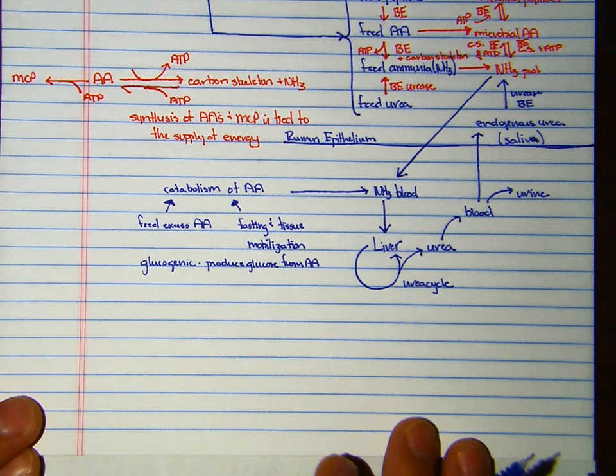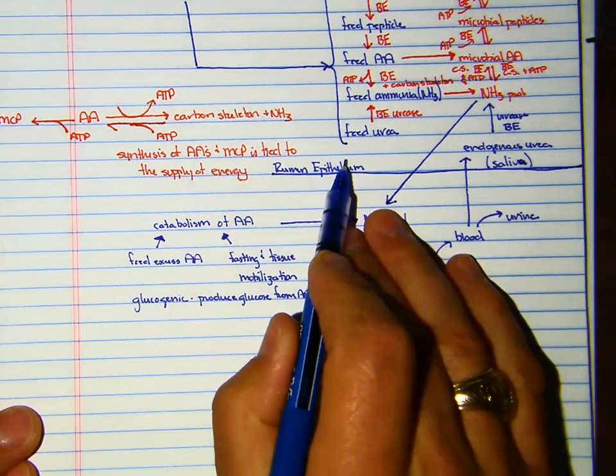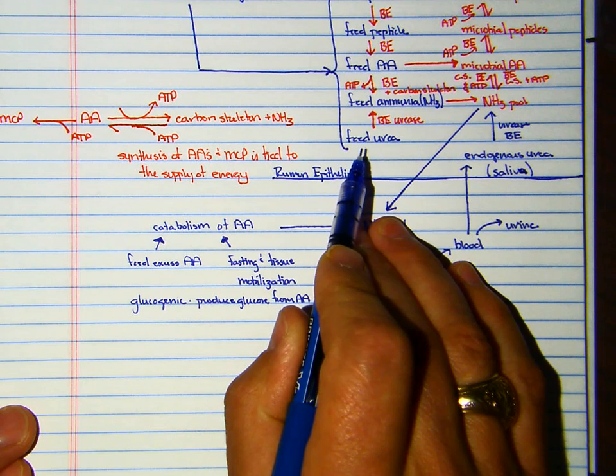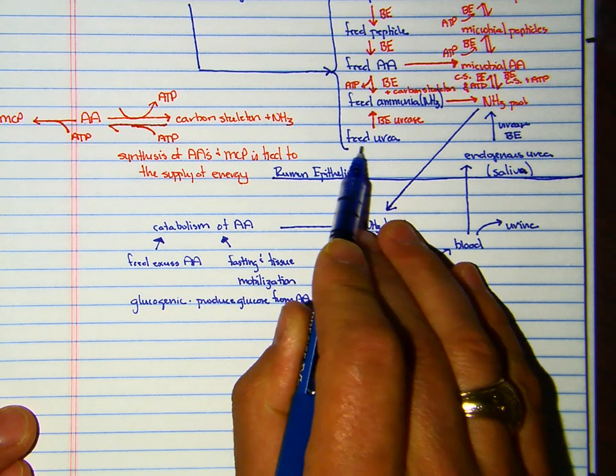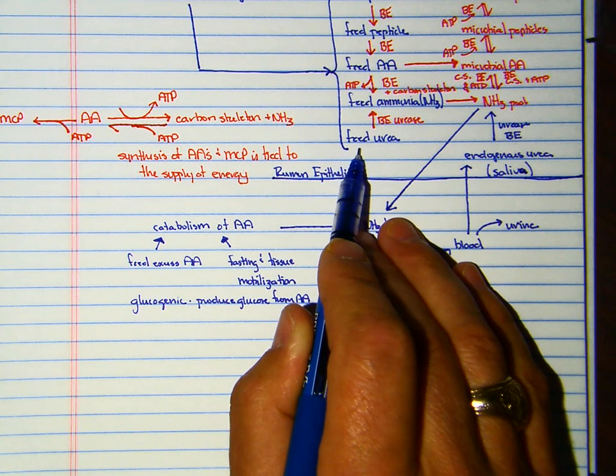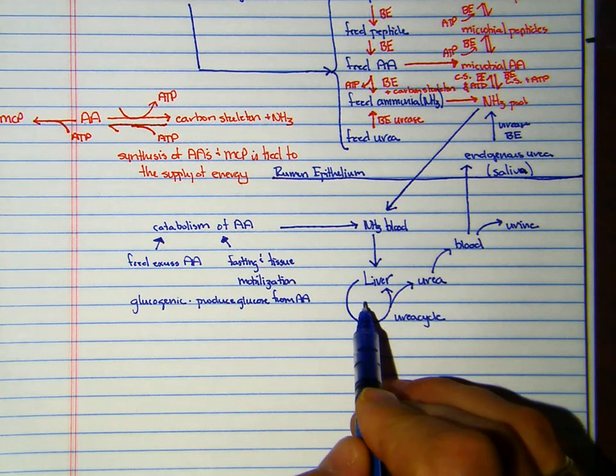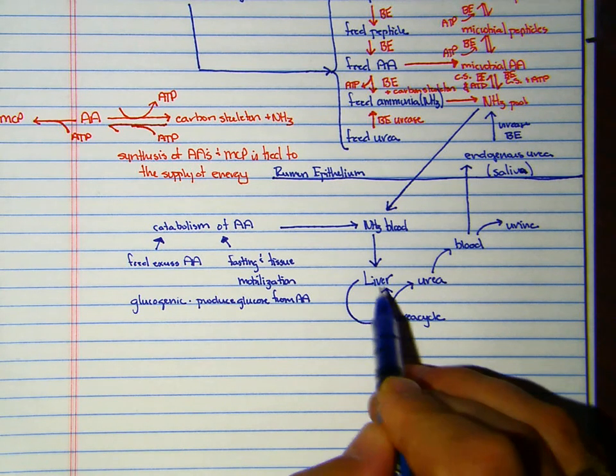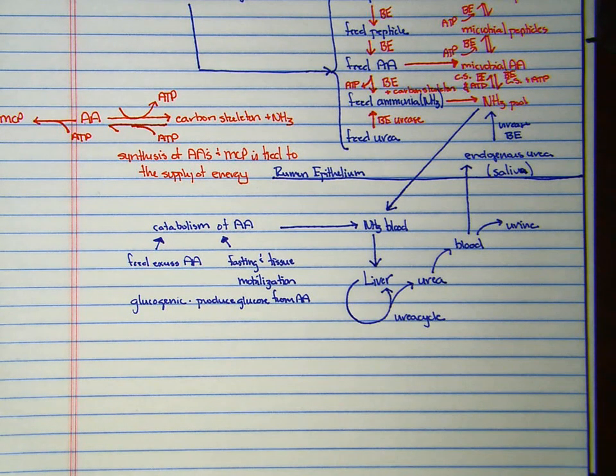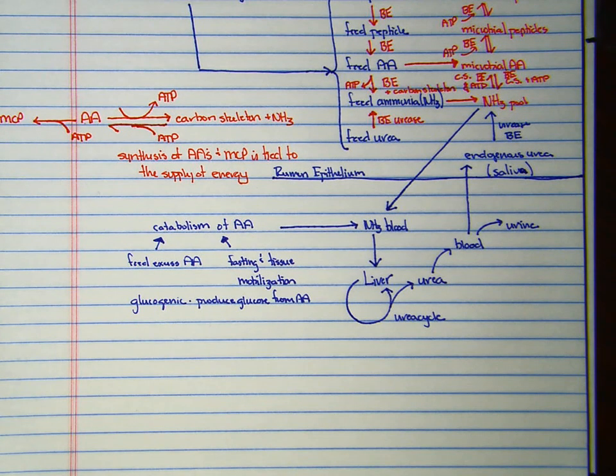One other thing: remember that we can feed urea to ruminants, but we can't really feed urea to non-ruminants. If we feed it to non-ruminants, it becomes ammonia very rapidly in the gastrointestinal tract. That ammonia gets absorbed and you overwhelm the capacity of the liver to detoxify it to urea. Ruminants are really good at detoxifying ammonia to urea.